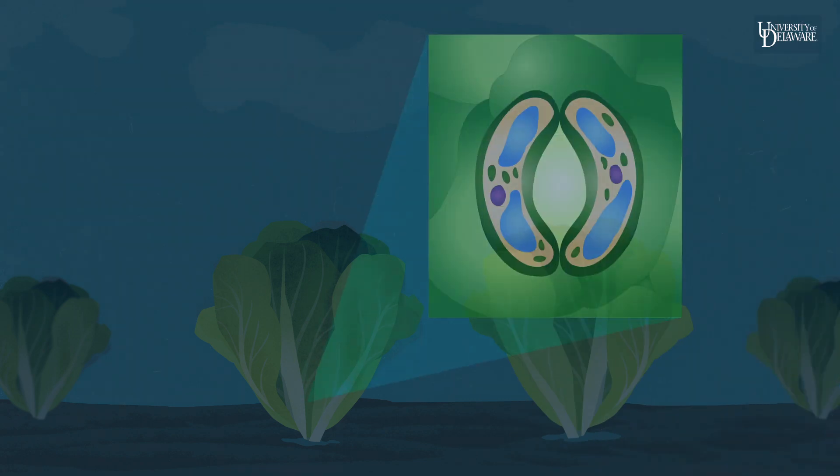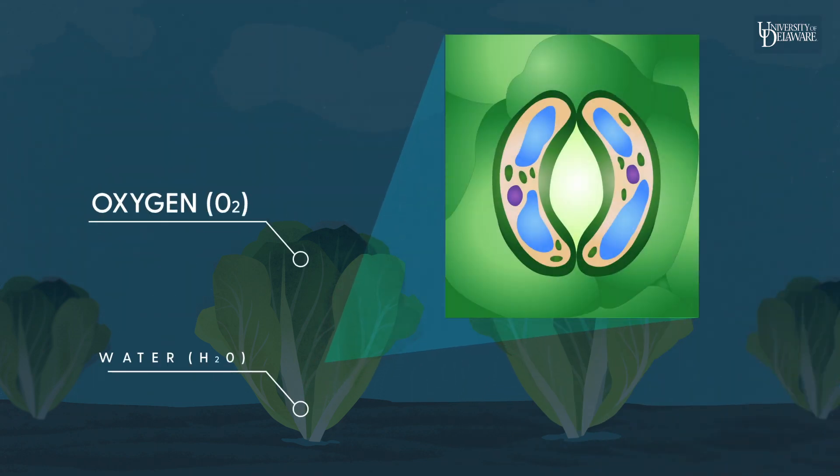Stomates are similar to pores on our skin. Besides allowing a plant to breathe and retain water, these stomates play a critical role in its immune system.